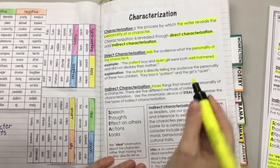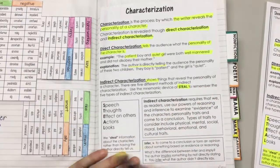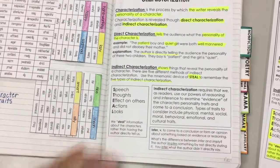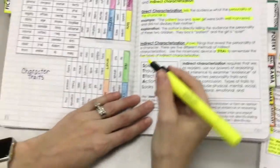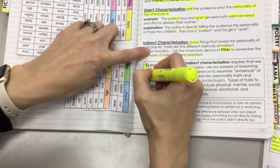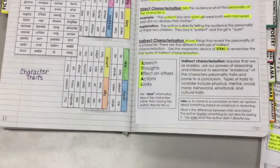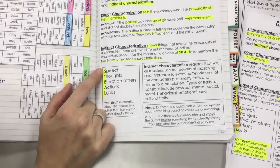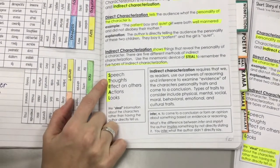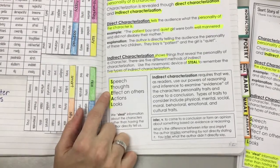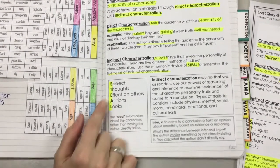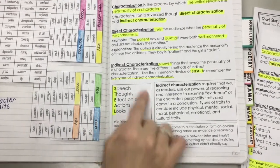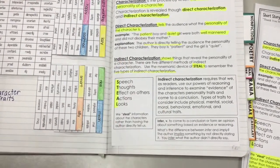We use the mnemonic device — and mnemonic just means memory device — of STEAL to remember the five types of indirect characterization. So we're going to highlight S-T-E-A-L. An author uses a character's speech, a character's thoughts, their effect on other people around them, the actions that they do, and the looks they have.